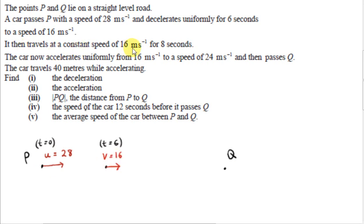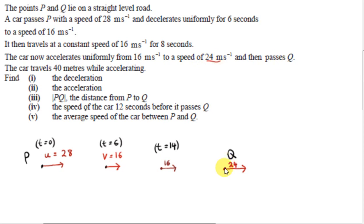The car then travels at a constant speed of 16 meters per second for 8 seconds. So 8 seconds later, the car is somewhere further along. The timer is now at 14 seconds — 8 plus 6. The car then accelerates uniformly from 16 meters per second to a speed of 24 meters per second and then passes Q. The speed is 24 meters per second the instant the car reaches Q. The car travels 40 meters while accelerating, so we don't have the time taken for the last leg, but we do have the distance traveled.